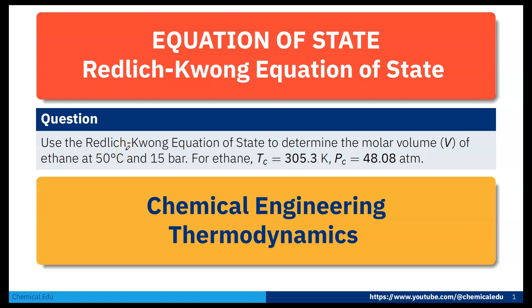Today I will talk about Redlich-Kwong equation of state. So here is the question. Use the Redlich-Kwong equation of state to determine the molar volume V of ethane at 50 degree centigrade and 15 bar. For ethane, critical temperature Tc is 305.3 Kelvin and critical pressure Pc is 48.08 atm.